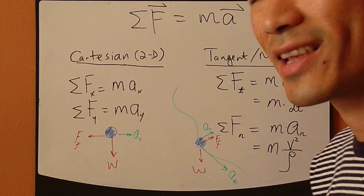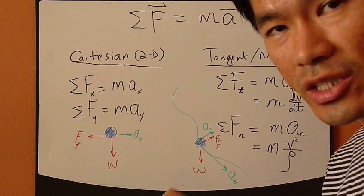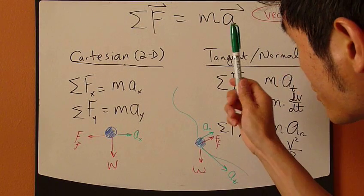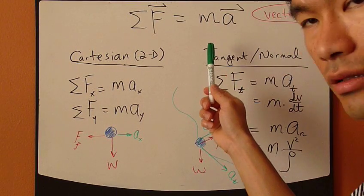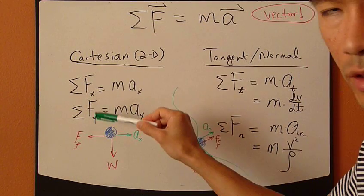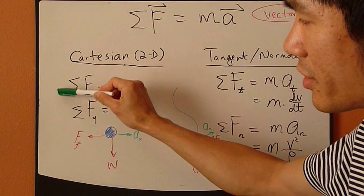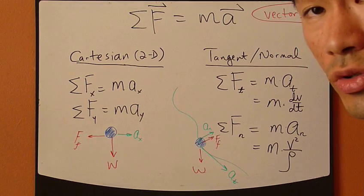One thing I do want to point out before we get into the example is that this second law is a vector equation. It's a vector. It means that you cannot start working on this before you actually write out the scalar form of this equation in each of the principal directions according to whatever coordinate system you choose.